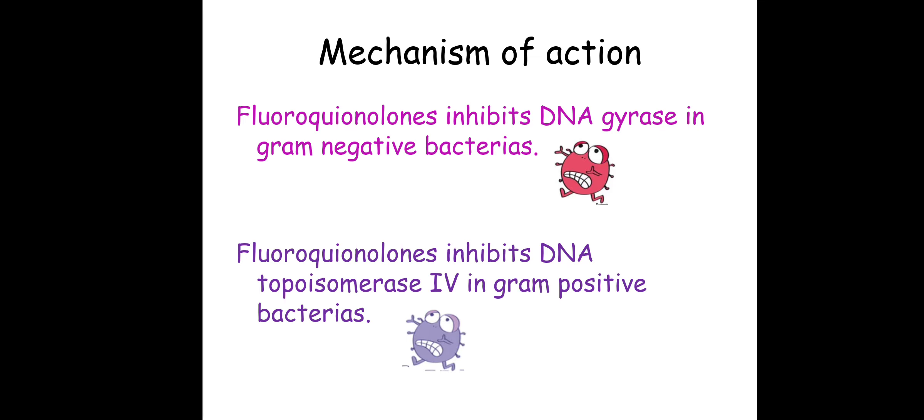Both these enzymes — gyrase in gram-negative bacteria and topoisomerase 4 in gram-positive bacteria — have almost the same kind of work to do. They produce a break in the DNA strand and then reseal it back; their actions are similar, which is cutting and resealing. Both remove positive supercoiling and introduce negative supercoiling.